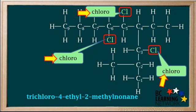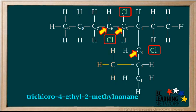Now we also need to specify which carbon atoms these three chloro groups are attached to — we need a number to identify the position of each, so we need three numbers. Looking closely at the structure, we see that the chloros are attached to carbons 3, 5, and 6 on the chain. So we write 3, 5, 6 and a dash in front of the trichloro. Note the numbers are written from lowest to highest with commas between them, and the numbers are separated from the words with a dash. Since there is nothing else to add, these numbers are at the beginning of the name, so there is no dash in front of them.